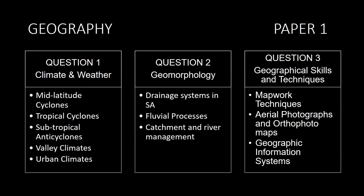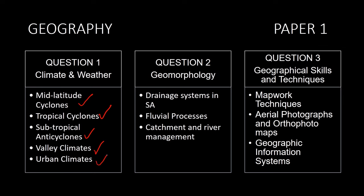Let's take a closer look at what content is examinable in this paper. In question 1, climate and weather, the following topics are relevant: mid-latitude cyclones, tropical cyclones, subtropical anticyclones — your three high-pressure systems: the South Atlantic high, the Kalahari high, and the South Indian high — as well as valley climates and urban climates.